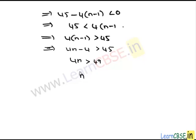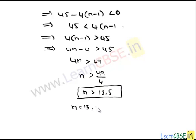Dividing both sides by 4, we get n is greater than 49 divided by 4, which is 12.5. Since n is an integer, n should be 13, 14, 15, 16, and so on.